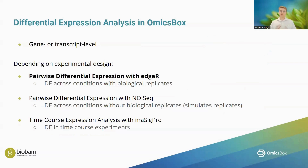Once we have our count tables at both the gene and transcript level we can move on to differential expression analysis. OmixBox offers three options: pairwise differential expression with EdgeR, which requires multiple biological replicates; pairwise differential expression with NOISeq, which can work with only one replicate per condition by simulating replicates; and time course expression analysis with MaSigPro for experiments across multiple time points. For our PacBio long reads from brown bears — comparing hibernation versus active state in adipose tissue across three bears — we have biological replicates, so we can safely use EdgeR.